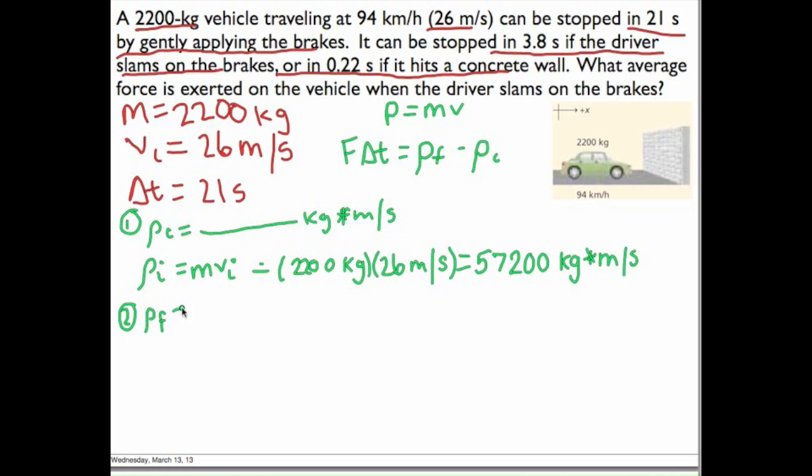That's going to be momentum final. So we'll do our final mass times our final velocity. And remember, we're stopped at the end, right? Because the car has stopped moving. So his final velocity is zero, which anything we multiply by zero is zero. So we're going to get a final momentum of zero.